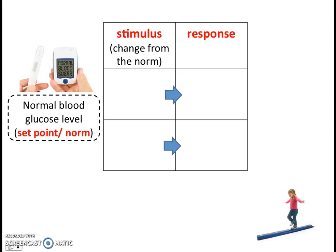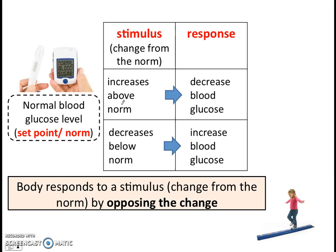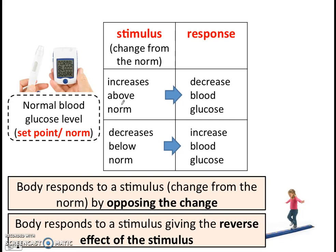Let's summarize with a table. We have a normal ideal blood glucose level as our set point. If the stimulus is that blood glucose increases above the norm, the body responds by decreasing blood glucose — doing the opposite. If the stimulus is that blood glucose decreases below the norm, the body responds by increasing blood glucose back to the set point. The general principle is that your body responds to a stimulus by opposing the change, by giving the reverse effect of the stimulus.